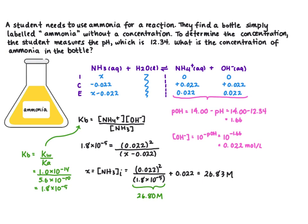Because we only get two significant digits from our pH we're going to round that number to 27 moles per liter. So a very high concentration of ammonia is required to get that high of a pH.